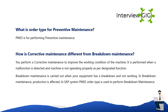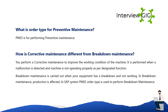PM03 is the order type for performing preventive maintenance. Corrective maintenance is performed to improve the work and condition of the machine when a malfunction is detected and the machine is not operating properly. Breakdown maintenance is carried out when equipment has a complete breakdown and is not working; in this case, production is affected. PM02 order type is used in the SAP system to perform breakdown maintenance.